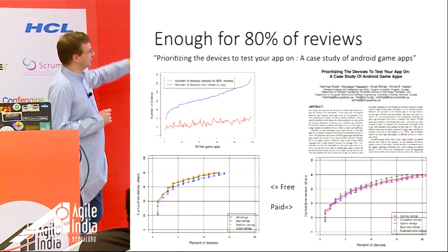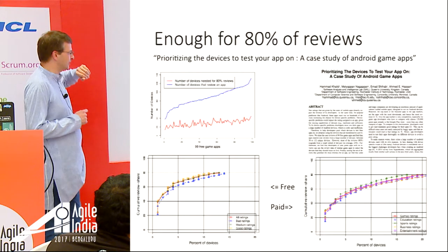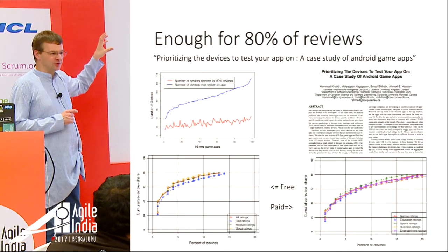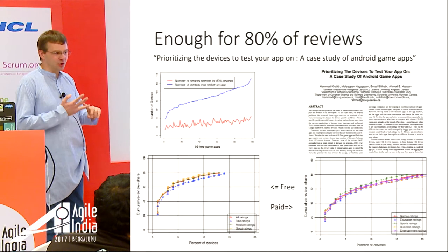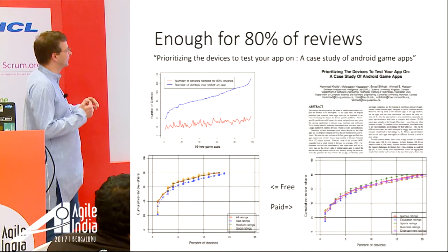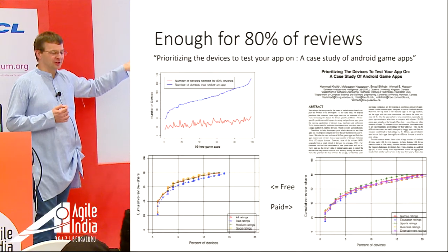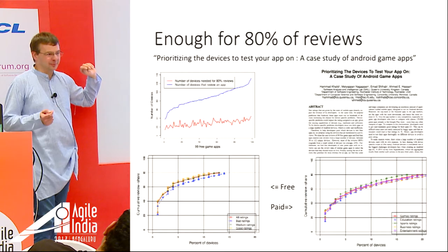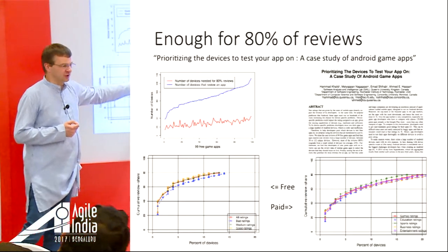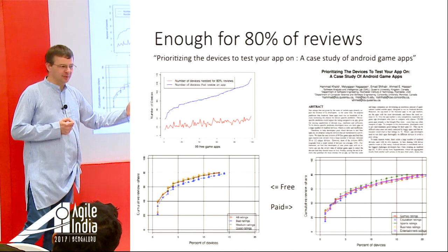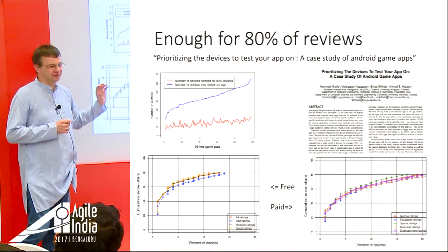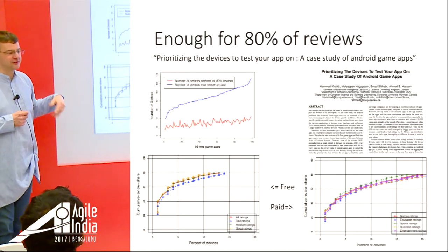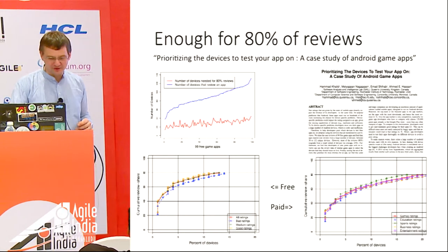Research on Android games — both free and paid — found that testing on roughly 10 to 15 devices is enough to give you 80% coverage for most applications. They looked at distinct device models associated with reviews. If you test on those devices and fix the bugs, those people won't complain. There are slight differences between paid and free apps.